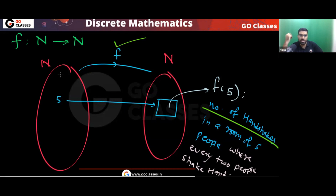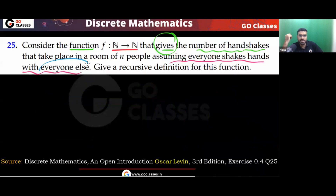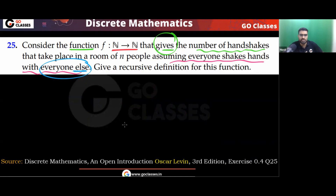If you have only one person in a room, how many handshakes are possible? If you have only one person, then zero handshakes are possible. Remember, the question says handshake with everyone else — you cannot handshake with yourself.